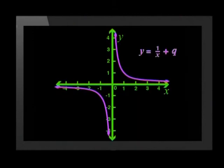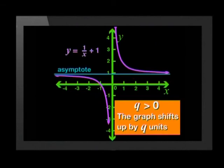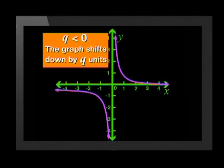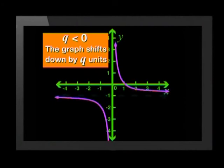We can summarize the effect of q on the graph like this. A change in q causes the graph of y equals 1 over x plus q to shift up or down. If q is positive, the parent graph shifts up q units. If q is negative, the parent graph shifts down q units.